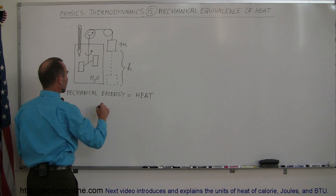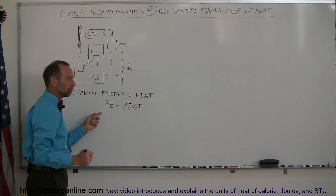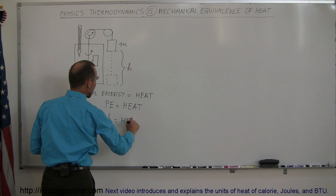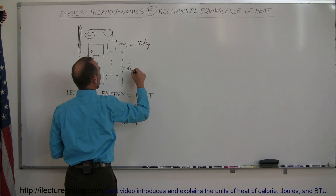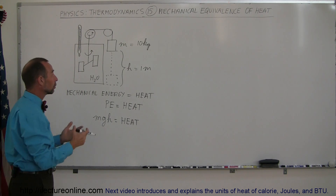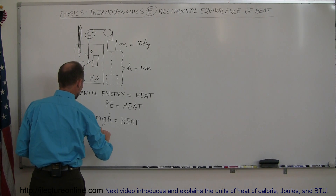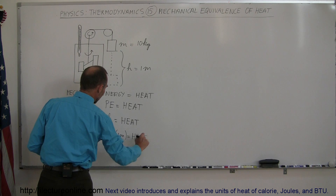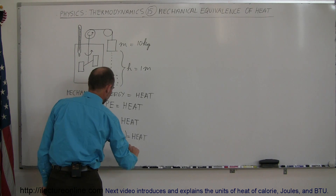The mechanical energy in this case was potential energy, and that potential energy had to equal the heat being generated. For a mass, potential energy equals MGH, which equals the heat generated. For example, with a mass of 10 kilograms, a height of 1 meter, and G equal to 9.8 m/s², that gives 98 joules equal to the heat generated.